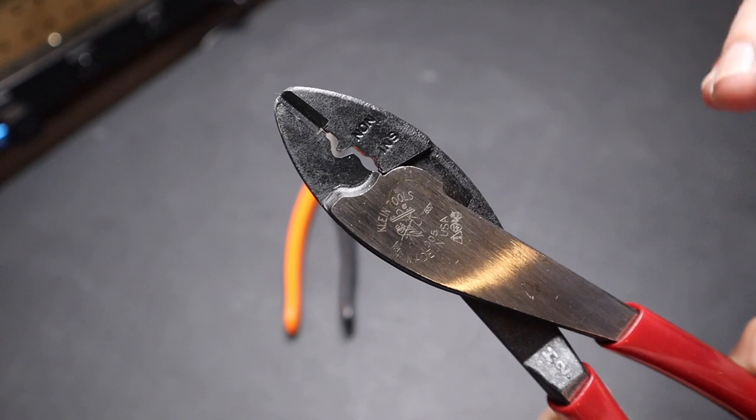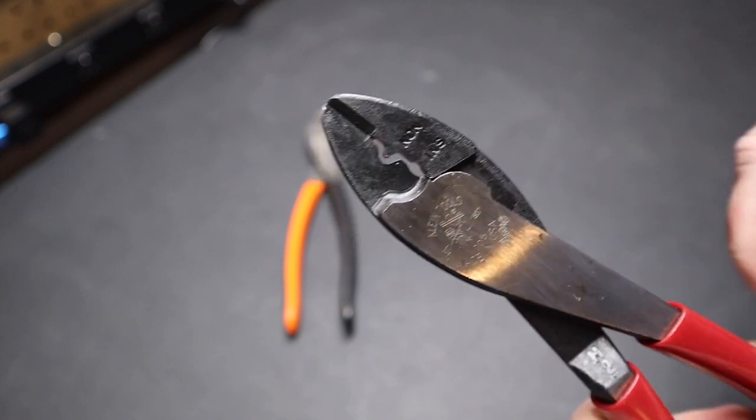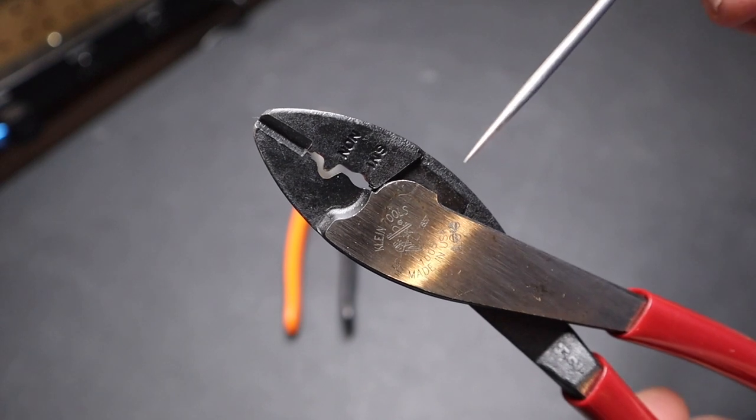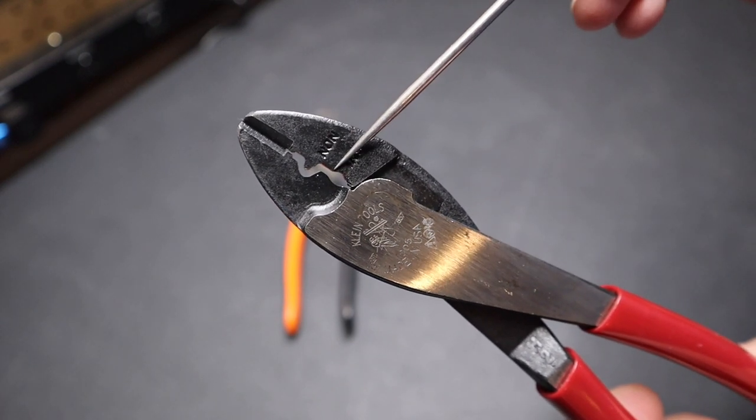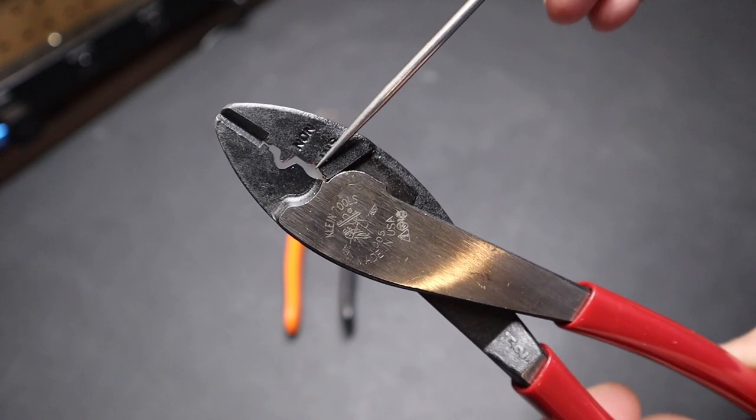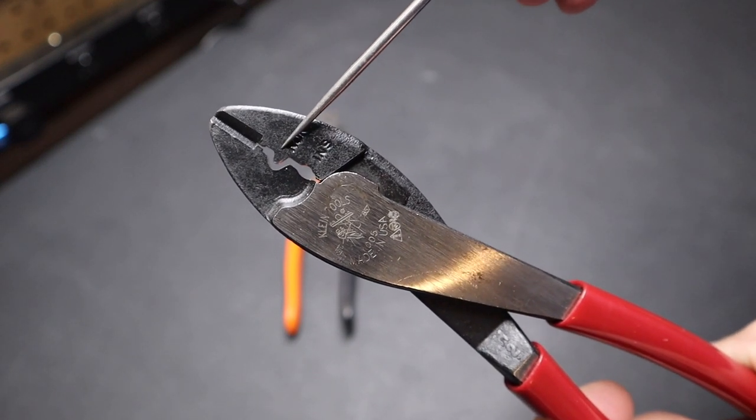This is considered one of the best crimpers on the market. Another one that's talked about a lot is the Channel Lock crimpers. And basically, the biggest difference between those two is this part of the die is switched. So non-insulated and insulated are alternated. So you have non-insulated back here, and you have insulated over here.